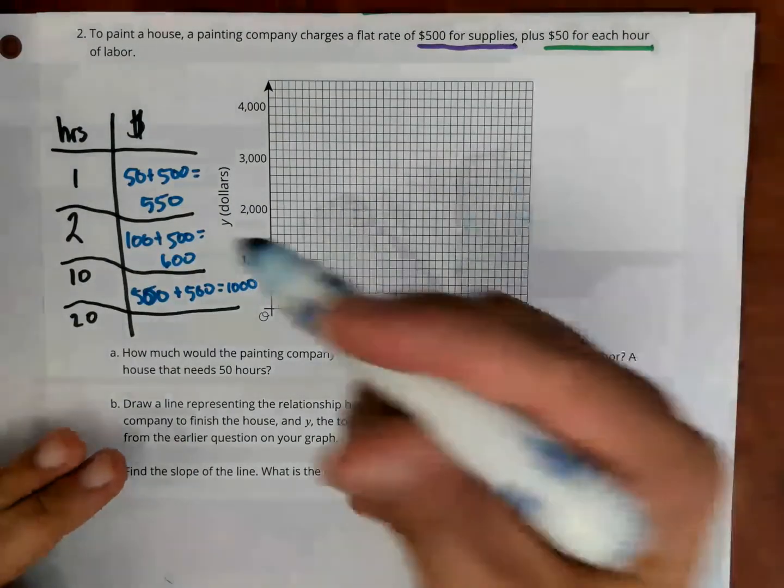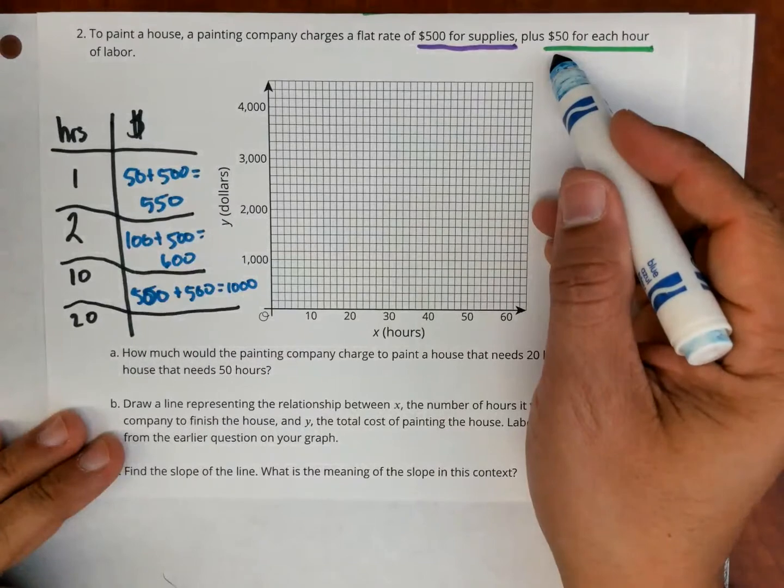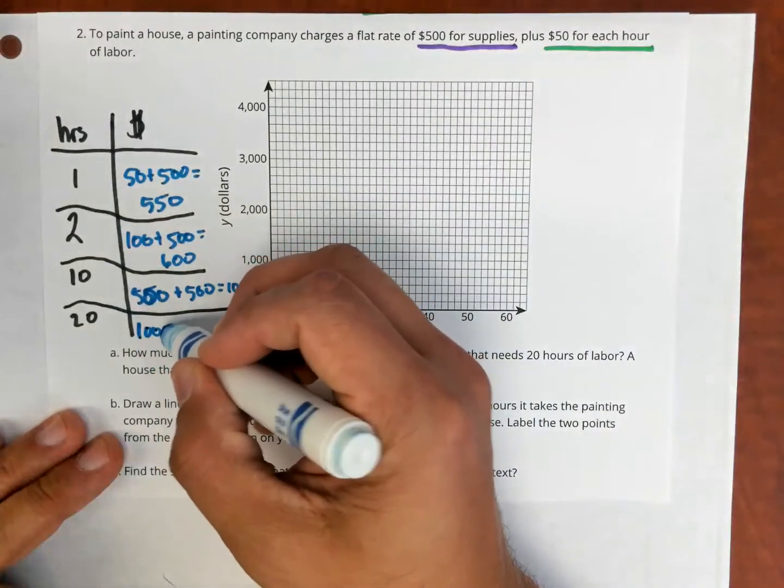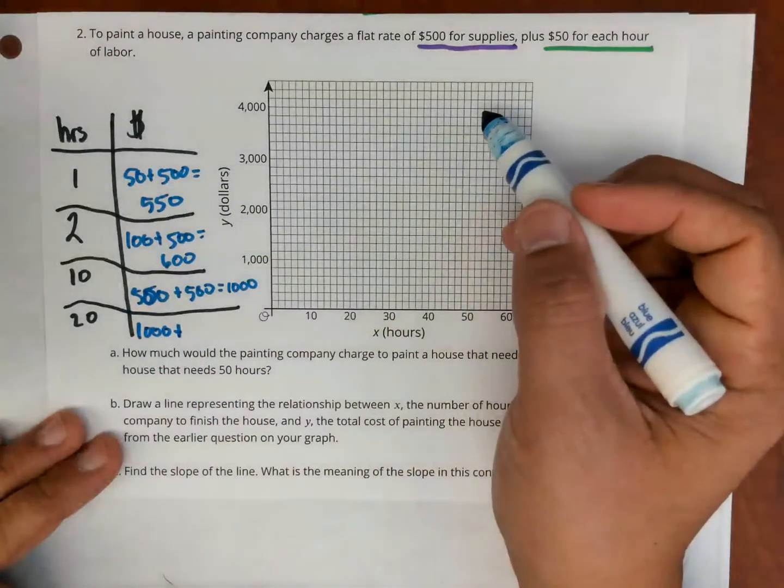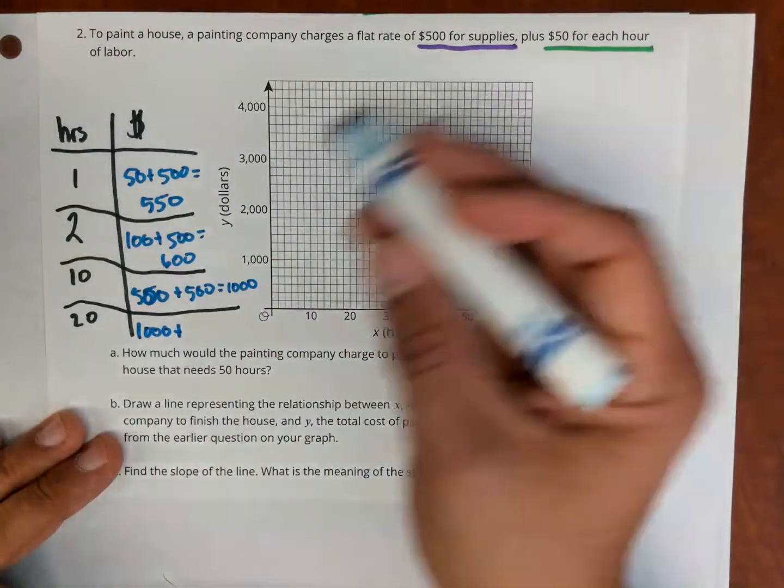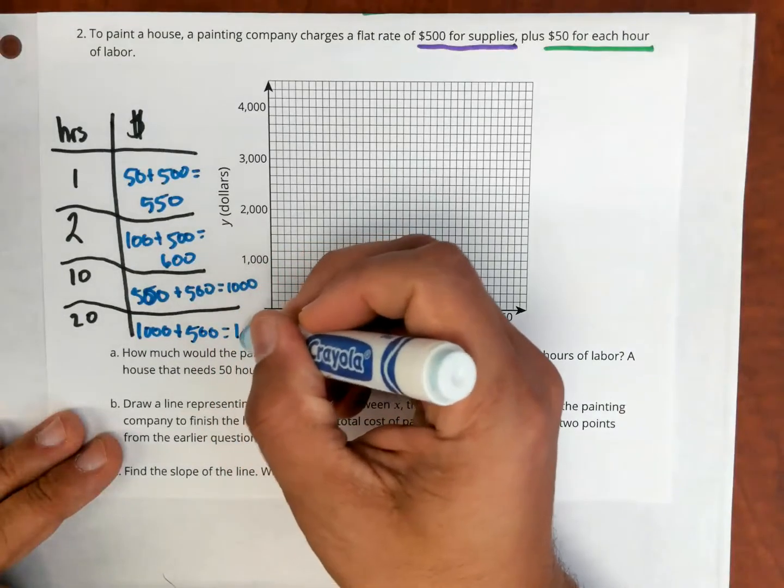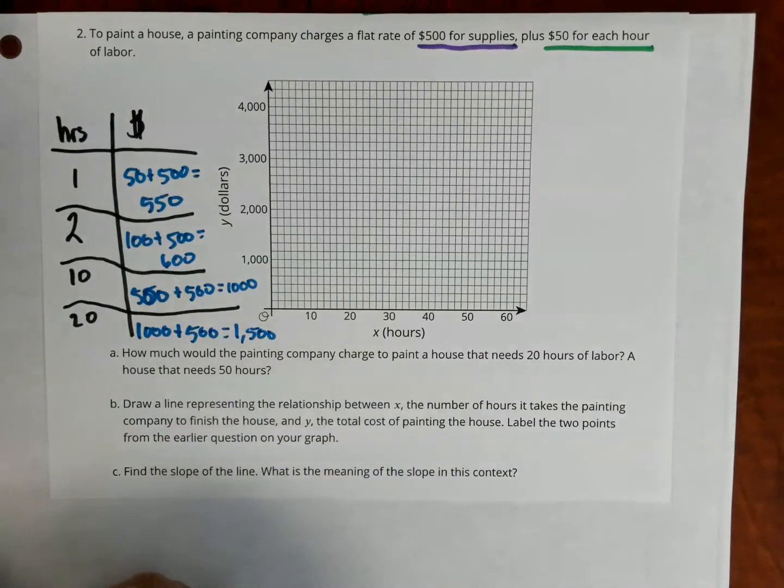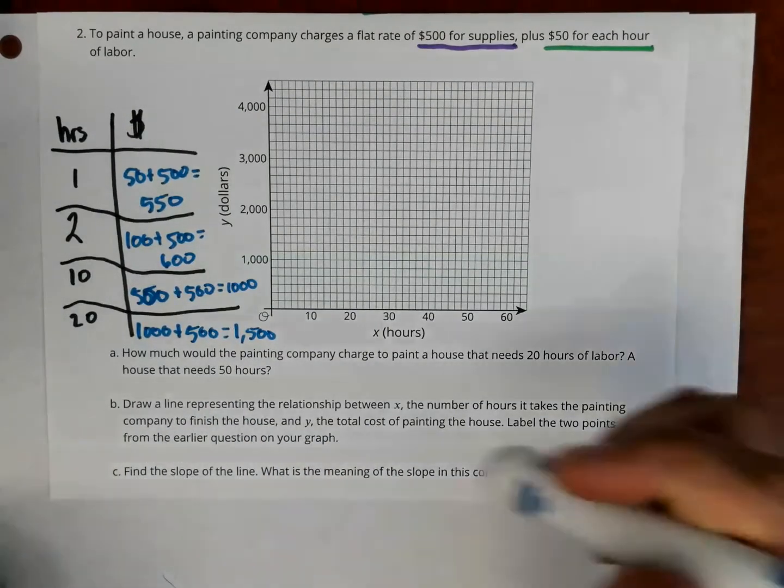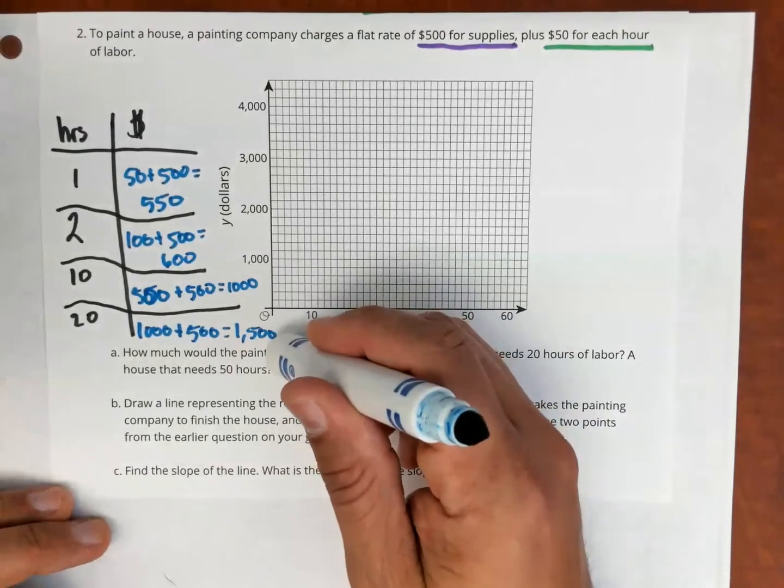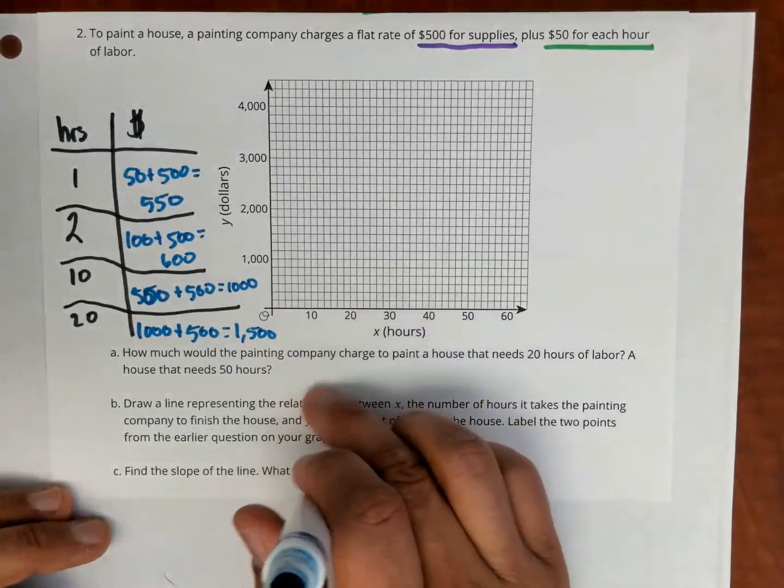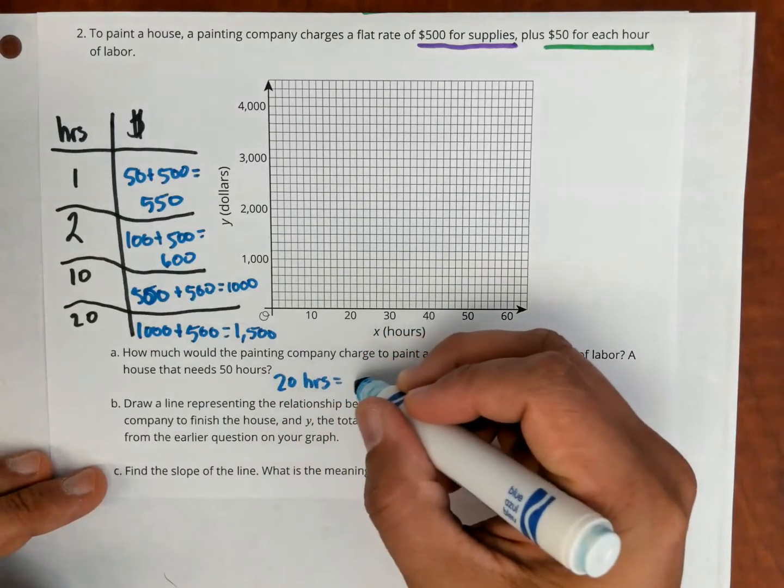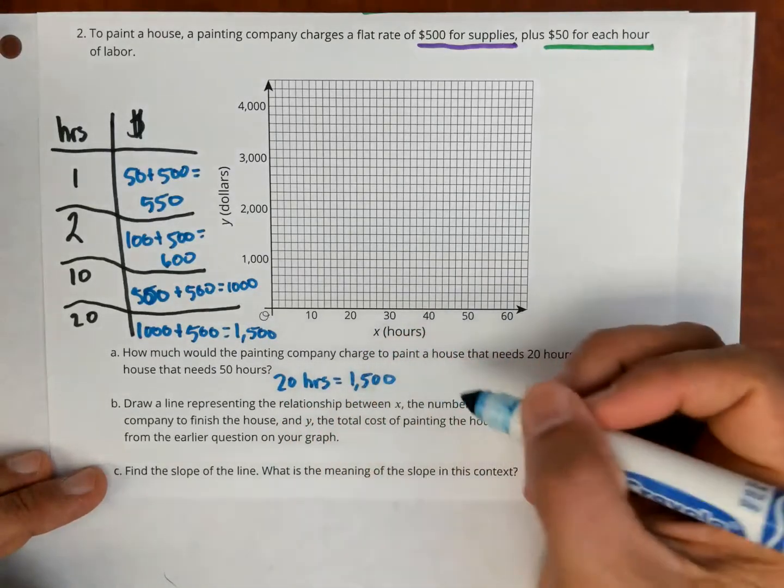Now for 20, it's going to be 20 times 50, which is $1,000, plus the supplies, $500, which is $1,500. So now here you can see, and remember, this is not proportional. So the doubling doesn't work. So I know 20 hours is $1,500.